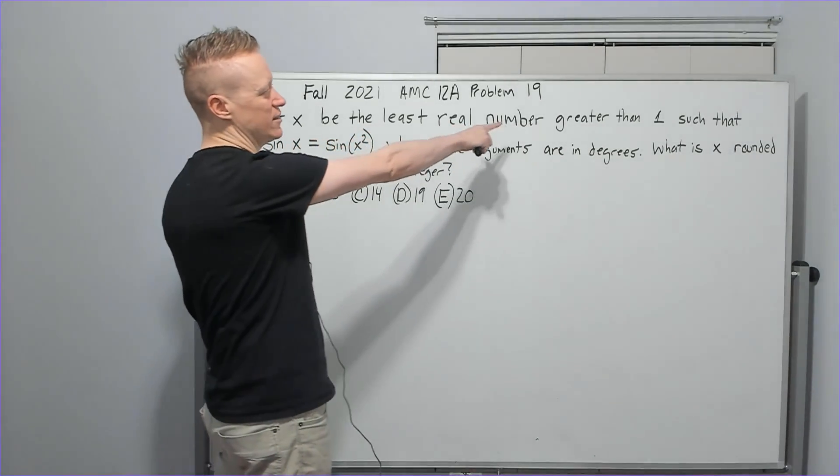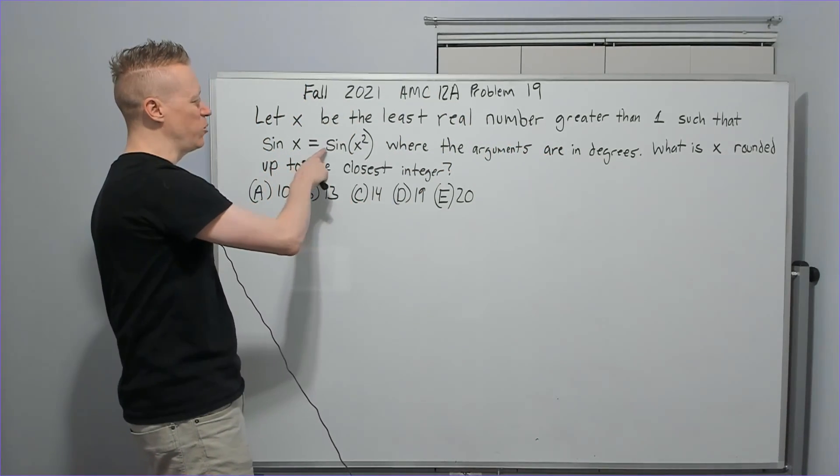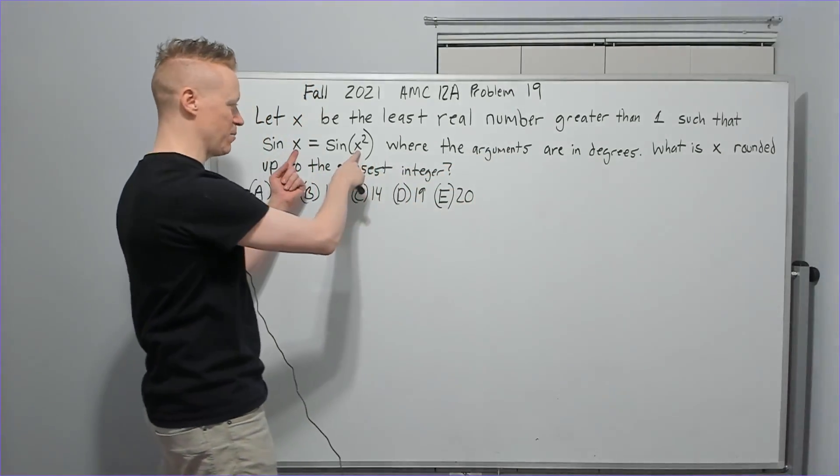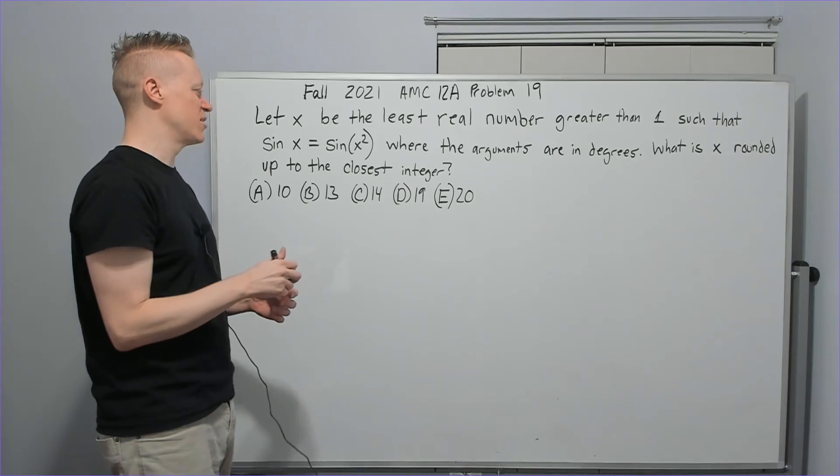Let x be the least real number greater than 1 such that sine of x equals sine of x squared, where the arguments, that's the inside parts, are in degrees. What is x rounded up to the closest integer?